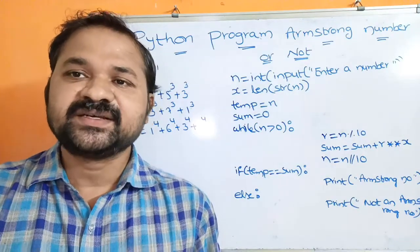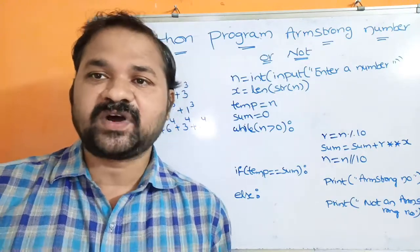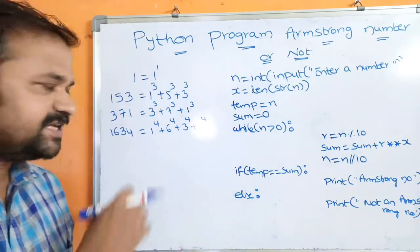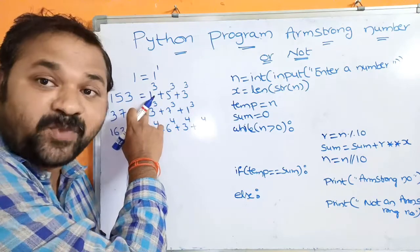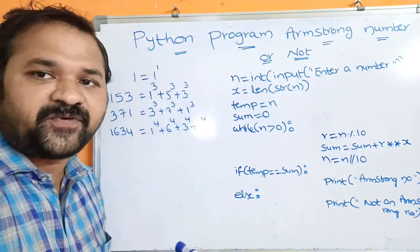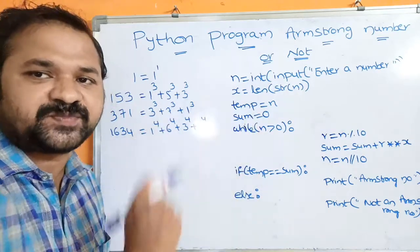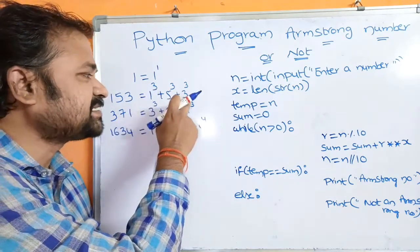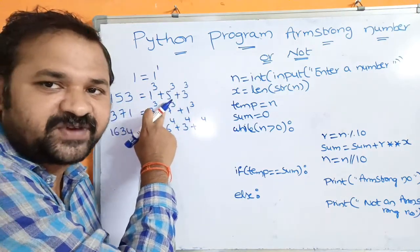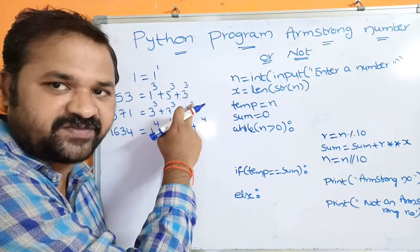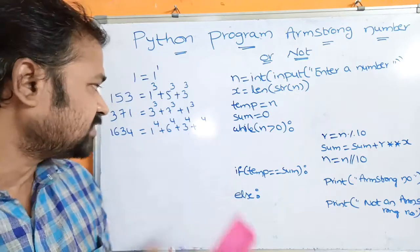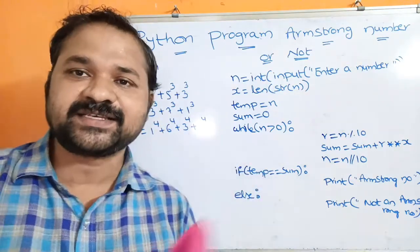An Armstrong number means the sum of cubes of digits of the number equals the given number. For example, if you take 153, we cube each digit and sum the results: 1 cube plus 5 cube plus 3 cube. So 1 cube is 1, 5 cube is 125, 3 cube is 27. Adding these three terms gives us 153 only. So that's why 153 is an Armstrong number.